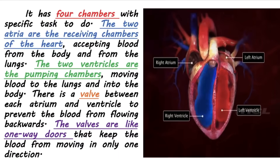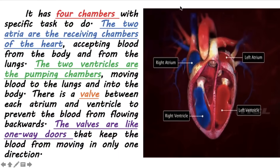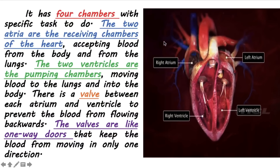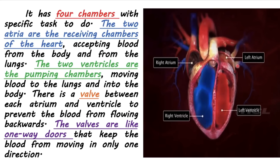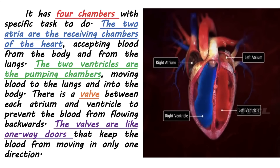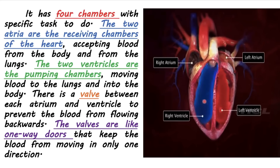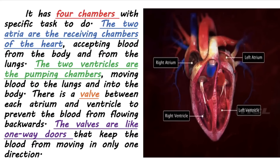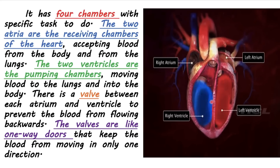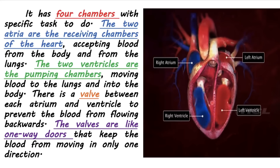Now, let us take a quick look at the parts of the heart. Our heart has four chambers: the two atria and the two ventricles. The two atria — the right and the left atrium — are the receiving chambers of the heart. They accept blood from the body and from the lungs. While the two ventricles — the right and the left ventricle — are the pumping chambers of the heart, moving blood to the lungs and into the body. There is a valve between each atrium and ventricle to prevent blood from flowing backwards. The valves are like one-way doors that keep blood moving in only one direction.